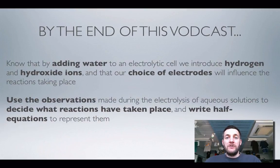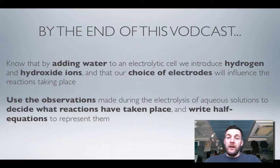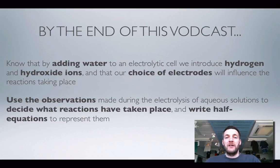That's it for the examples. As stated at the start, adding water causes hydrogen and hydroxide ions to be present, and using different electrodes can give different products. What we've been practicing is looking at observations given in a question, using those to decide what products must have formed, and then writing half equations to show how those products formed from the electrolytes or from the electrodes. This is quite a lot more difficult than the electrolysis of molten substances because there's a lot more to consider. Please feel free to ask questions or post comments.